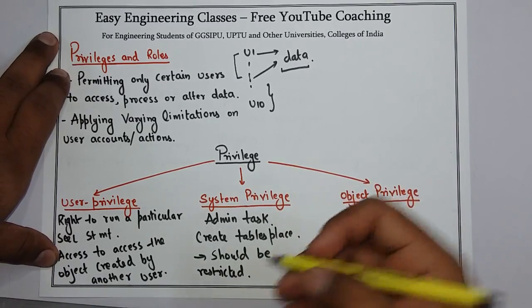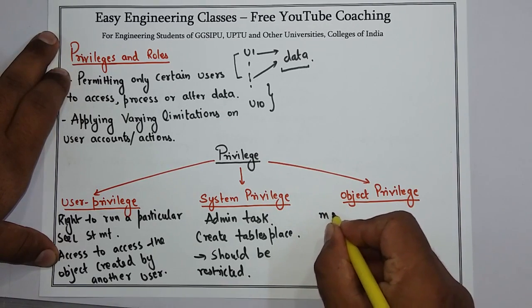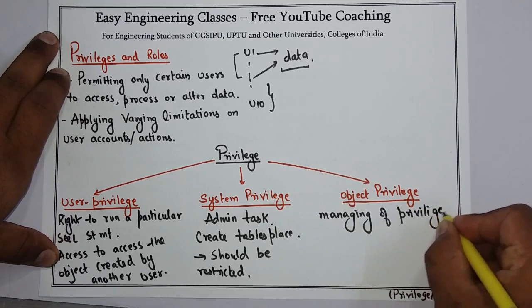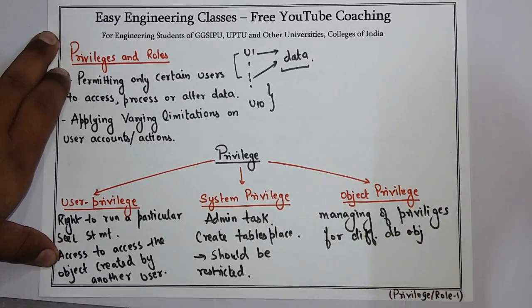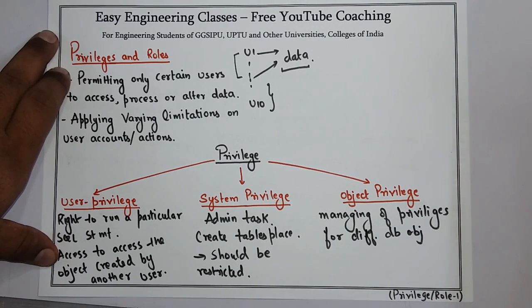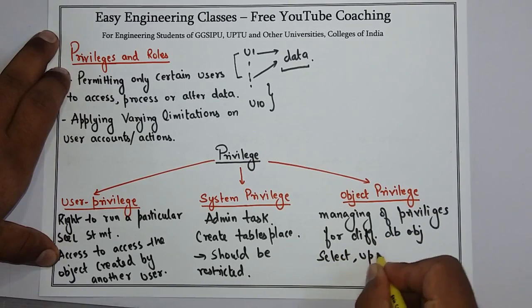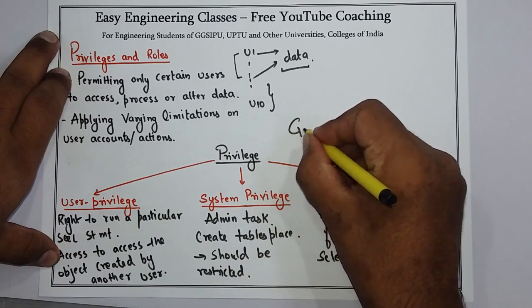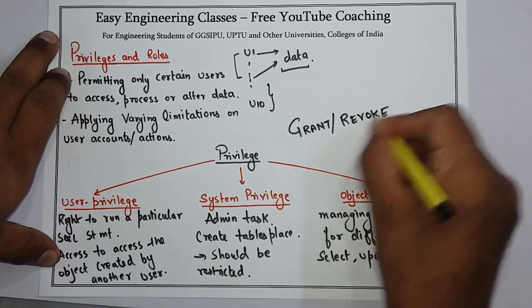Next is object privilege. It describes how to manage privileges for different types of objects in a database. For example, updating a table, selecting rows from another user's table, or execution of a stored procedure of another user — all come under object privilege. This includes SELECT, UPDATE, EXECUTE, etc. These privileges are granted using the GRANT command and taken back using the REVOKE SQL command.